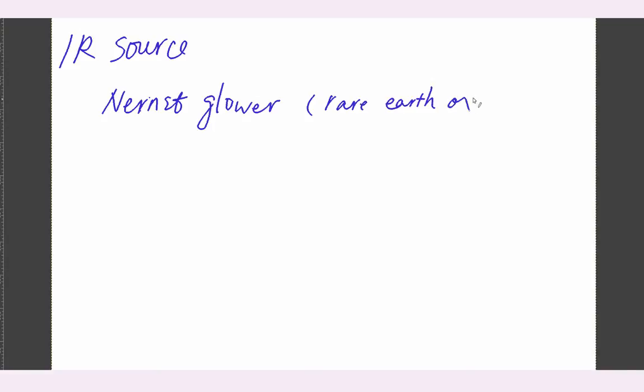Now we discuss the components in IR. First we discuss the IR source. We can have a Nernst glower, or a globar source.